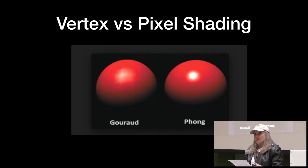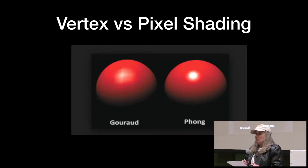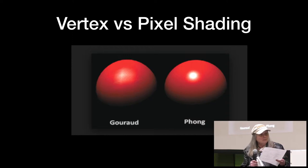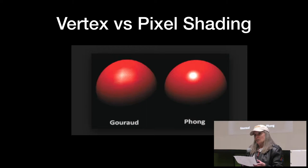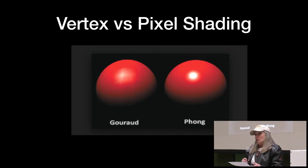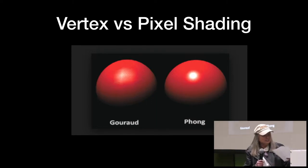I started in OpenGL before it was a standard, and it was a fixed function API. The lights were solid and fixed, and what it did was shade your object per vertex and then interpolated the pixels between. But now OpenGL is programmable, and you're able to program each vertex and each pixel, which you can see the difference.